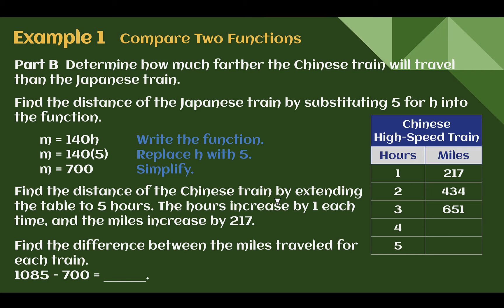Next, how much farther will the Chinese train travel than the Japanese train? It asks us to find it after 5 hours. So let's figure out 5 in both of the different functions. So if we substitute 5 into our Japanese train's equation, 140 times 5 would be 700. So after 5 hours, the miles is 700.